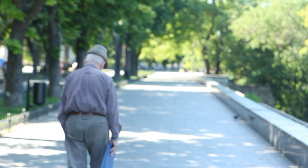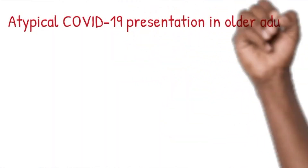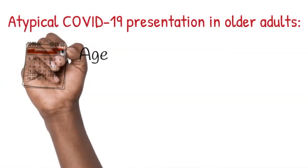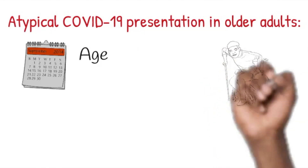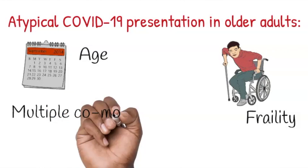However, in older adults the presentation can be quite different, and you have to have a higher index of suspicion that something might be going on. This makes the diagnosis more complicated, and treatment more complicated as well, because the diagnosis can be delayed. What adds to the complexity is that older adults have other comorbid or chronic illnesses — they might also have hypertension, diabetes, COPD, or asthma.